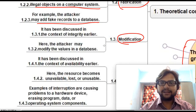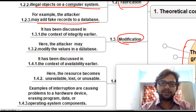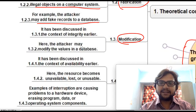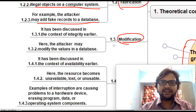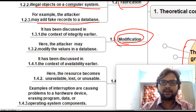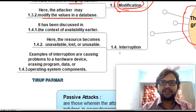Next is modification — actually modifying bank account details, messages, or other data. For example, Person A sends a message to Person B; in between, Person C attacks that communication, modifies the message, and sends it on to Person B. Both the sender and receiver are unaware of this attack. This is discussed in the context of integrity — the priority of data integrity must be maintained.